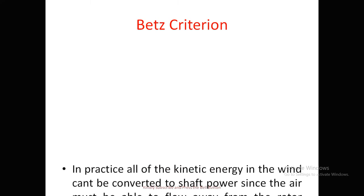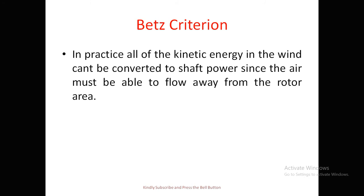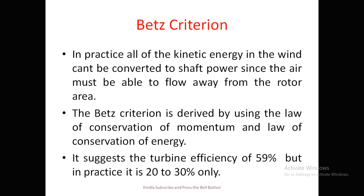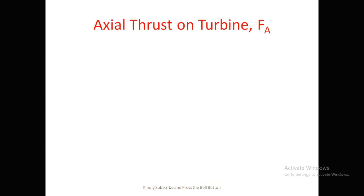In practice, all kinetic energy of the wind cannot be converted to shaft power because some energy is lost and air must be able to flow away from the rotor area. Betz's criterion is derived using the law of conservation of momentum and conservation of energy. It suggests a theoretical maximum turbine efficiency of about 59.3%, but in practice only 20 to 30 percent is achieved.